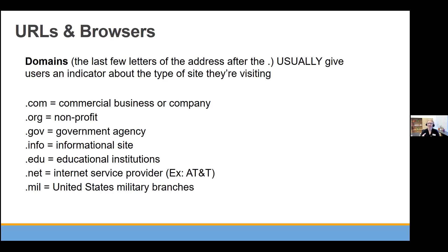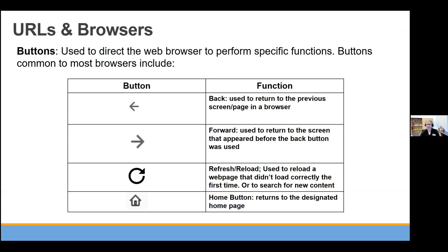Nowadays you can find domains that have almost anything. Rebecca and I were looking some up before class — we had dot-IO, which is usually for startup companies, dot-club, and dot-fit for like a health organization. So it's no longer always true that sites fall neatly into those traditional categories, but do notice the domain of whatever site you're visiting.